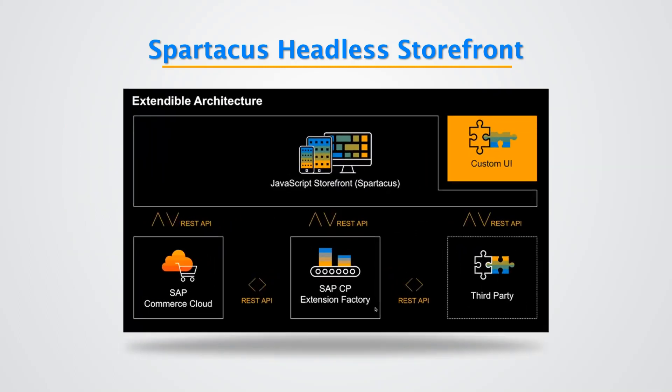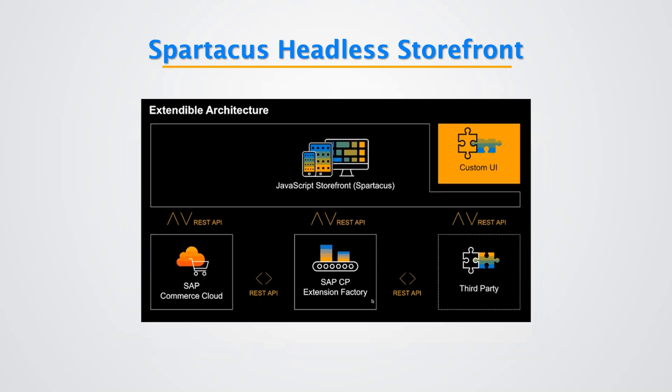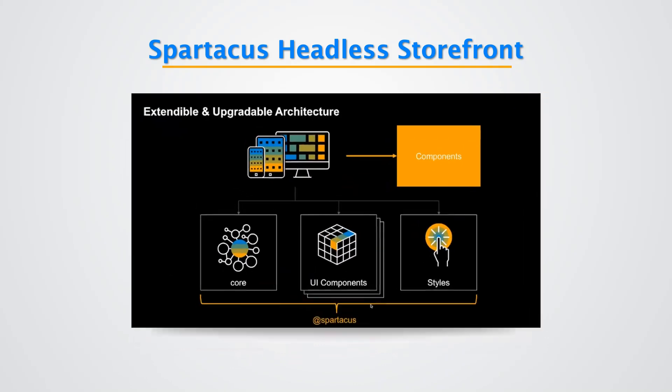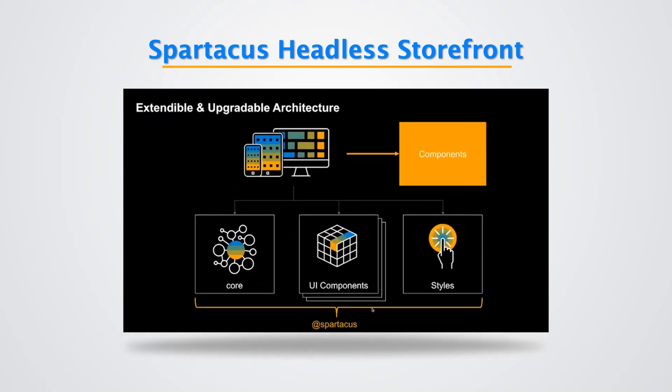Spartacus architecture is extendable and the storefront communicates with the commerce platform using REST APIs. It can be customized for business needs and extended with REST API communication with third-party services. The architecture consists of three key modules: a core module for commerce key functionalities, a UI components module for UI templates, and a styles module for customer presentation.